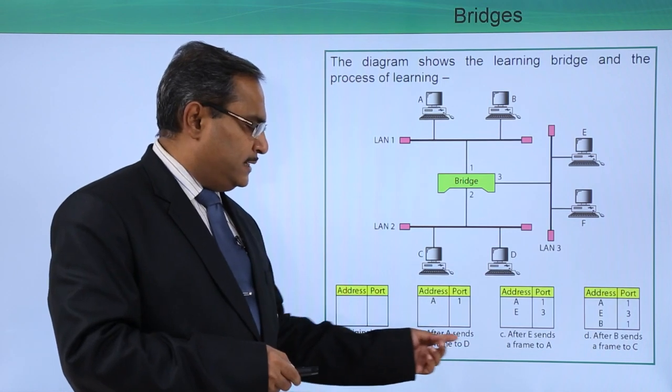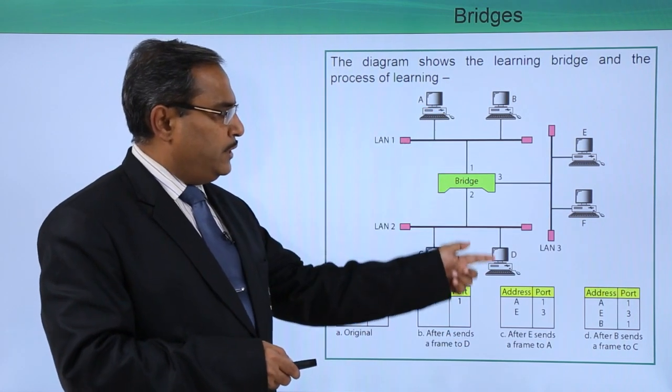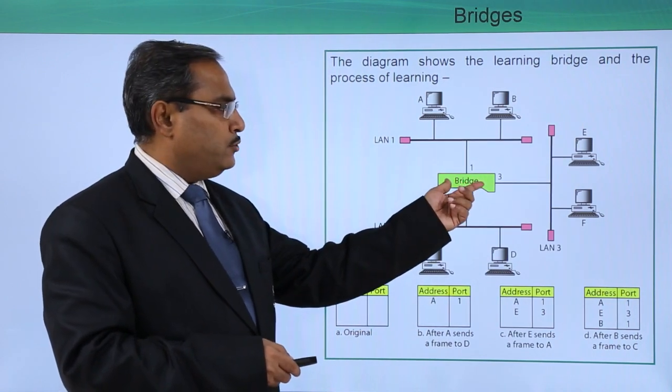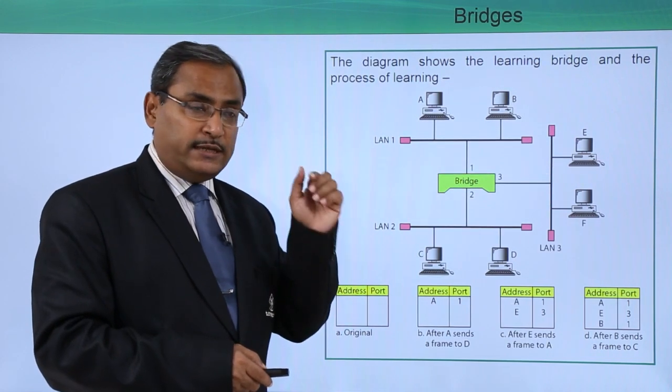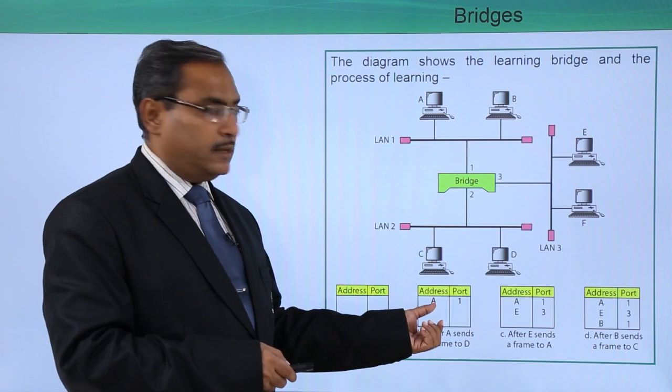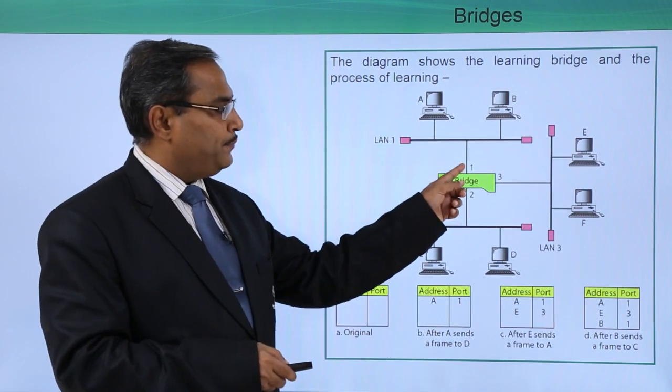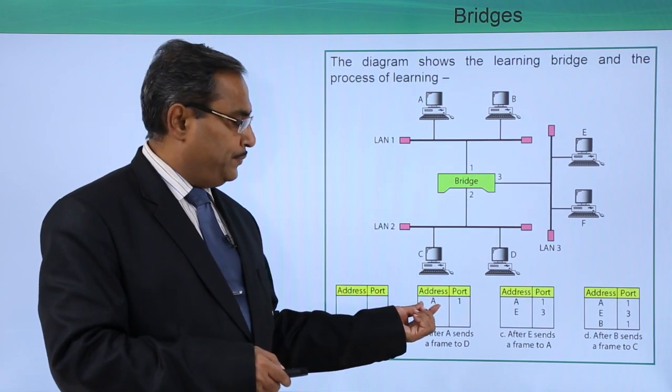When after A sends a frame to D, A is trying to send a frame to D. When this particular packet of information will be coming to bridge, as bridge can read the MAC addresses in the frame, this entry will be made - that means the node A is connected with this port, port number 1. Obviously, it is not node A, actually it is the MAC address of node A.